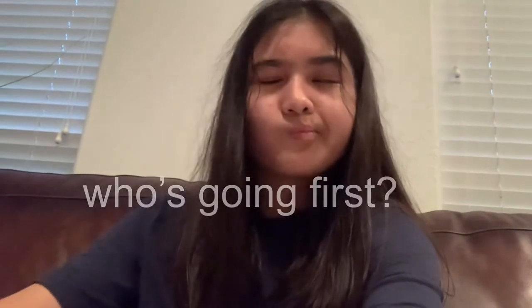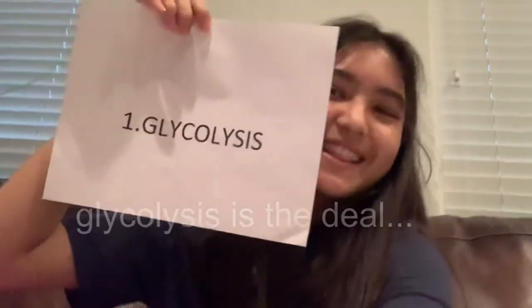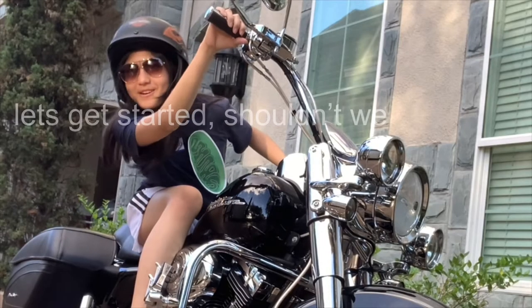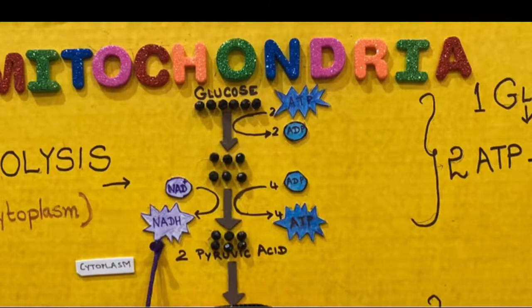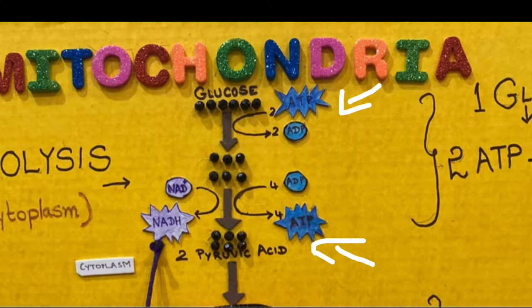Who's going first? Glycolysis is the deal — it's anaerobic, no oxygen for this field. Let's get started. A molecule of glucose breaks into two molecules. A pair of bonds are broken releasing ATP.